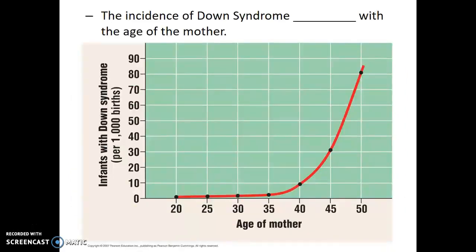Non-disjunction can happen during the formation of sperm or during the formation of eggs — it isn't automatic that this is caused by one parent or the other. However, one quirk of the human reproductive system is that females are born with all of the eggs they will have for their entire life. So as the mother ages, the eggs in her ovaries also age, and the cellular machinery used to separate chromosomes begins to break down. Therefore, the incidence of having an offspring with Down syndrome increases with the age of the mother, because the error rate in gamete formation increases for women as they age.